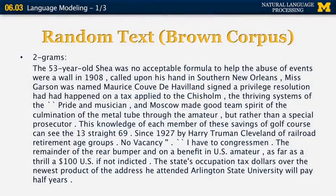Let's look at some random text generated from the Brown corpus, one of the oldest and most important corpora in natural language processing, using n-grams of different lengths. A bigram random text looks like this — this is not text that was actually in the Brown corpus, but text generated automatically using a bigram model trained on it. We pick the first word at random, in this case 'the,' then look at a word that appears with high probability after 'the' — that's '53 years old.' Then we pick the next word 'Shea' based on its probability of appearing after '53 years old,' and so on. Every word is generated based on the previous word alone.